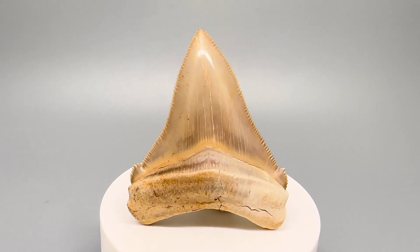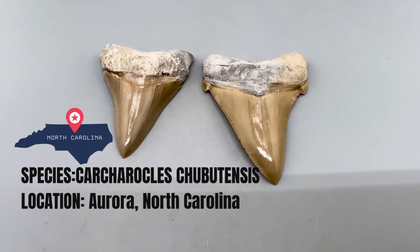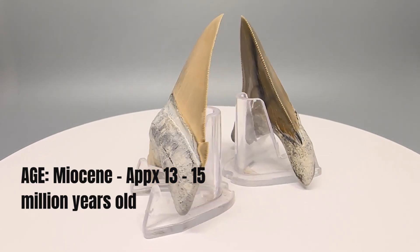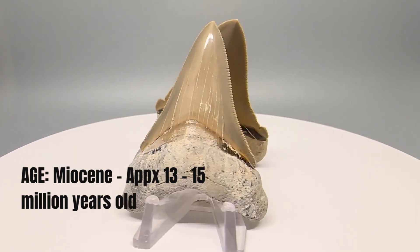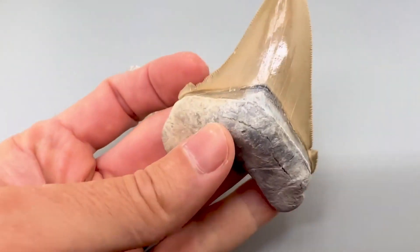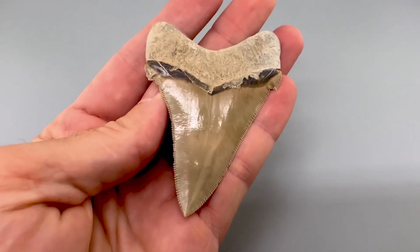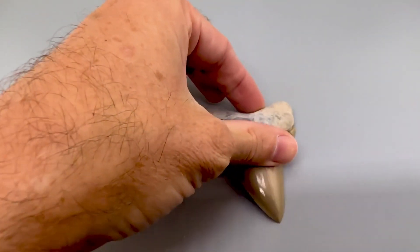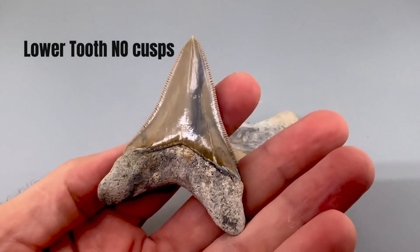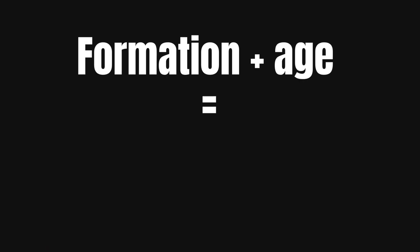We're going to go through examples from different locations throughout this video about what you should be looking for. Here are Chubutensis out of the Middle Miocene Pungo River Formation in Aurora, North Carolina. These are about 13 to 15 million years old — probably the classic Chubutensis that you see on the market. Look at these two teeth. The differences are enormous. You've got this upper tooth with big pronounced cusps and sharp serrations, but the lower tooth doesn't really have any cusp at all. Formation and age is the main identifier for Chubutensis teeth.